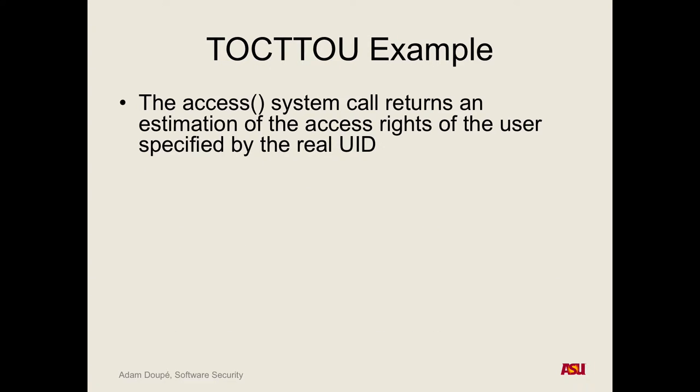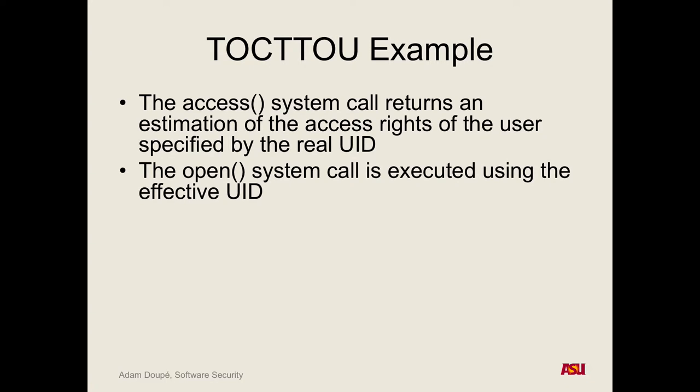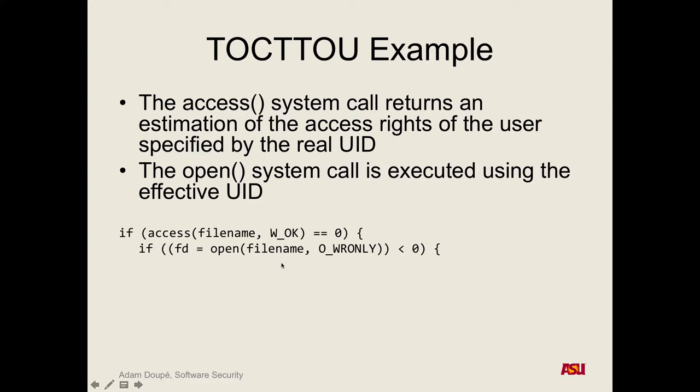The way this actually happens in Linux applications: there is the access system call that attempts to estimate whether the real user of this program would be able to access this file — where the real user is the user who started the program, not the effective user ID, which is the setUID user. And as we saw, the open call takes in a string. So it's something like: if access(filename, W_OK) equals zero, then open the filename as write-only, and write to that file descriptor.